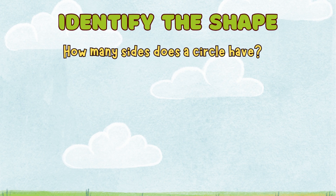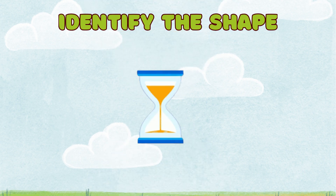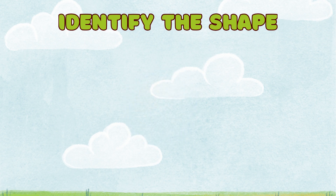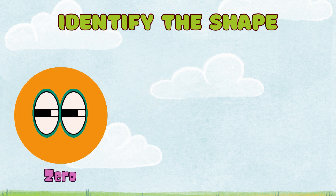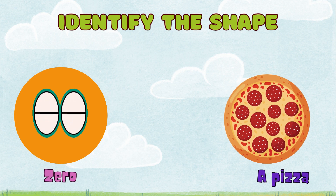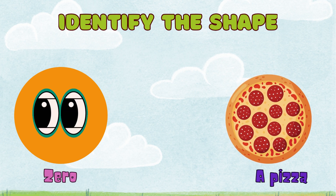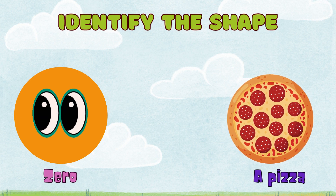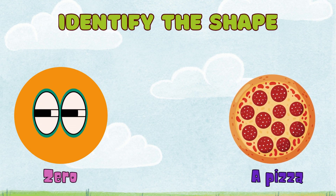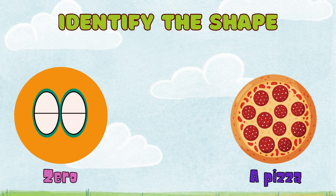How many sides does a circle have? The answer is zero. A circle does not have any sides as it is round in shape. The shape of a pizza is a circle.